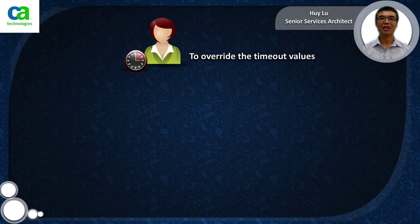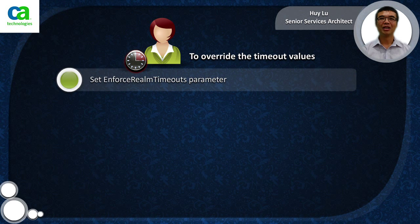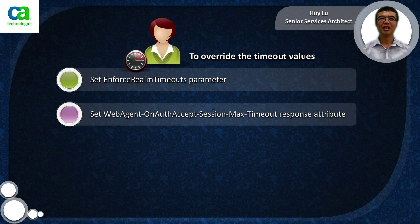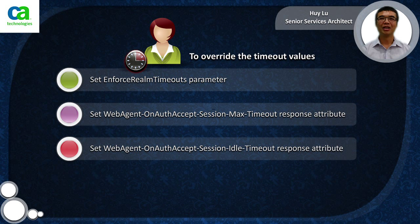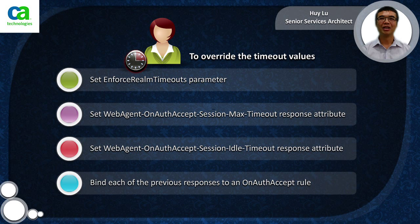To override the timeout values we need to do 4 things. Firstly, we need to set the EnforceRealmTimeouts parameter in the agent configuration object. Second, set the WebAgent onAuthExcept session maxTimeout response attribute — this value will be in seconds. If we want to change the idle timeout, we set the WebAgent onAuthExcept session idle timeout response — also in seconds. Finally, we need to bind the responses to the onAuthExcept rule.